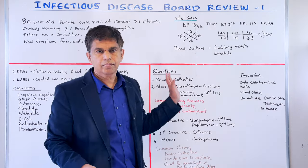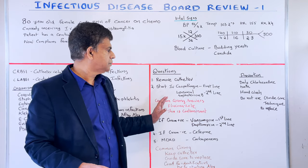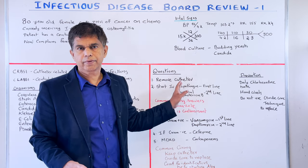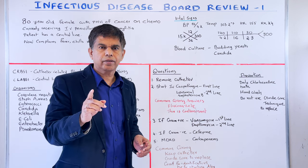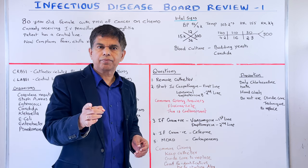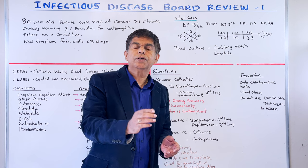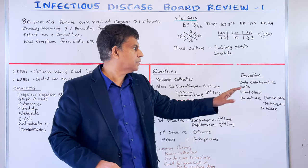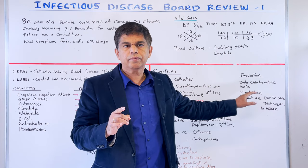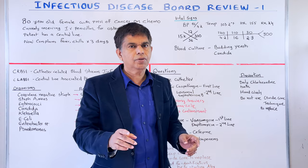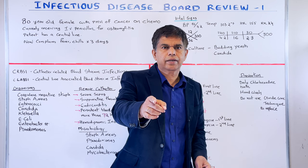To summarize: remove the catheter first, and treat right away. For Candida, use IV caspofungin — do not pick fluconazole, it doesn't cover all strains. For gram-positive, use vancomycin, second line is daptomycin. For gram-negative, use cefepime. For MDRO, use carbapenem. For prevention: daily chlorhexidine bath, hand washing, and do not use a guide wire to replace the catheter. Thank you for joining us today. God bless.